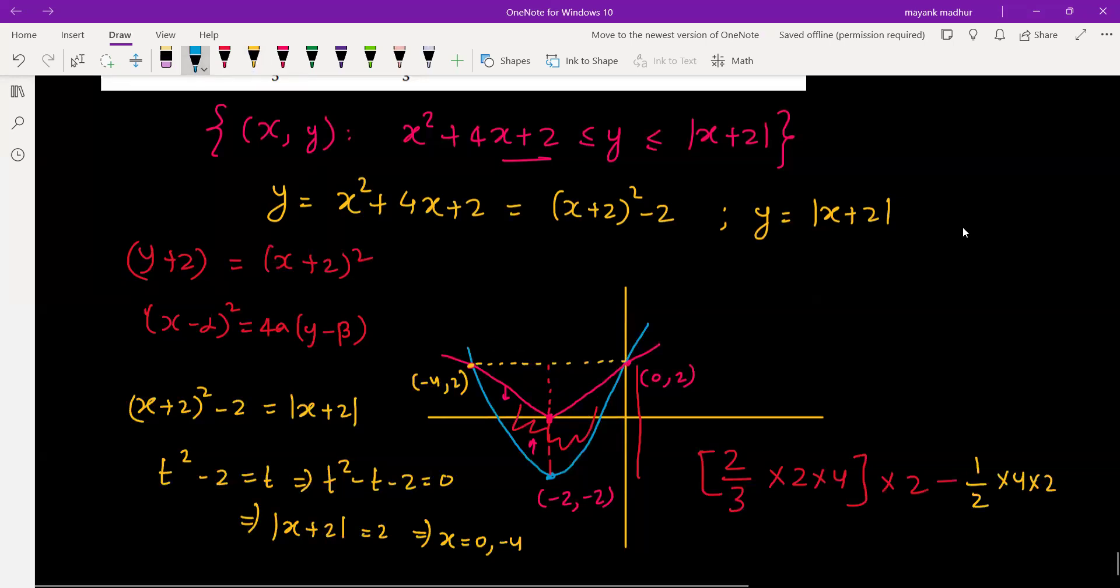Let's simplify this. This will be 2 × (2/3) × 2 × 4 = 32/3, minus 4. So it will turn out to be 20/3.